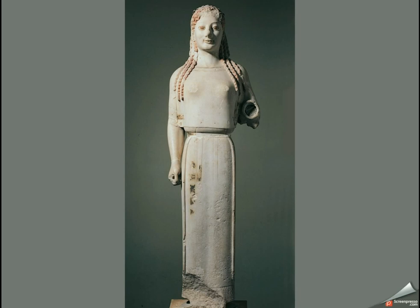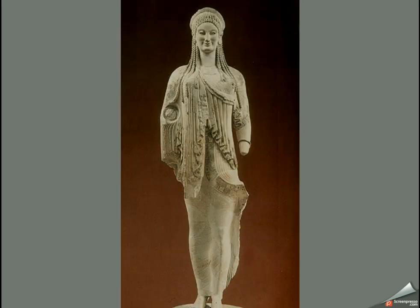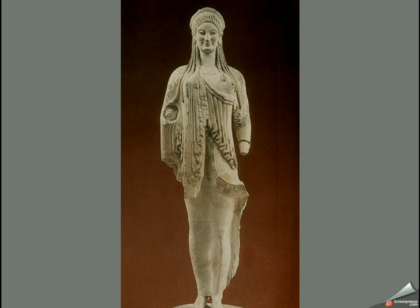Looking at this next figure — you can see the elaborate hairstyle and elaborate jewelry. The garment here is called a himation — a free-flowing mantle that can be arranged creatively in whatever way the woman might desire, but it's also very expensive. And it gives us a unique insight into the New Testament scriptures.